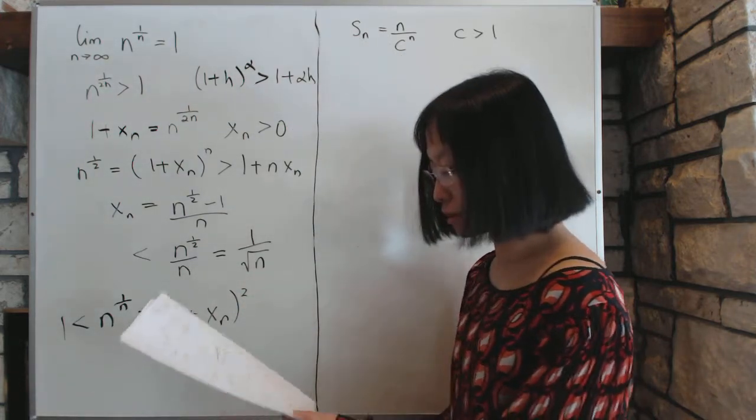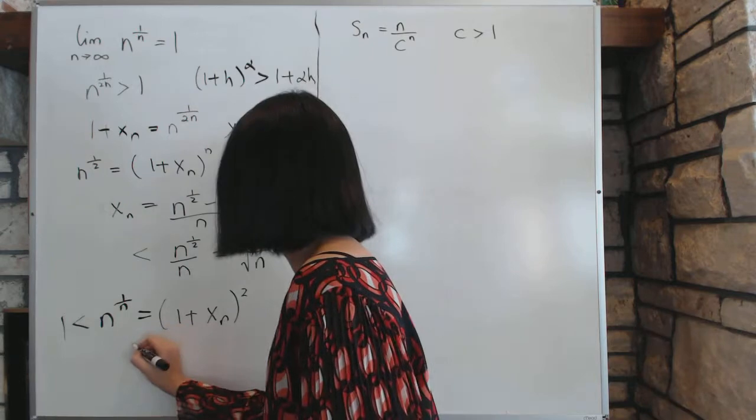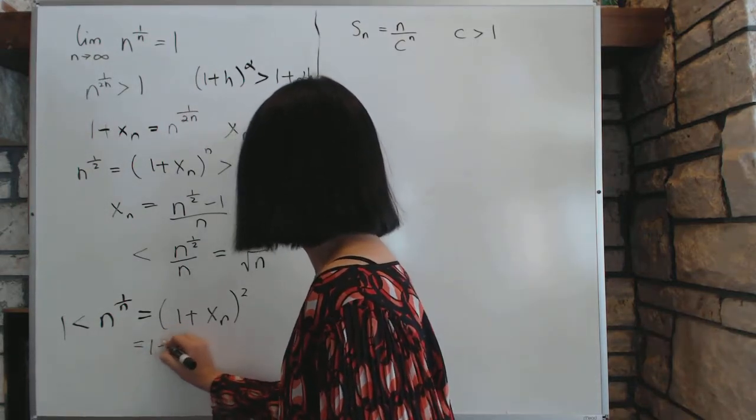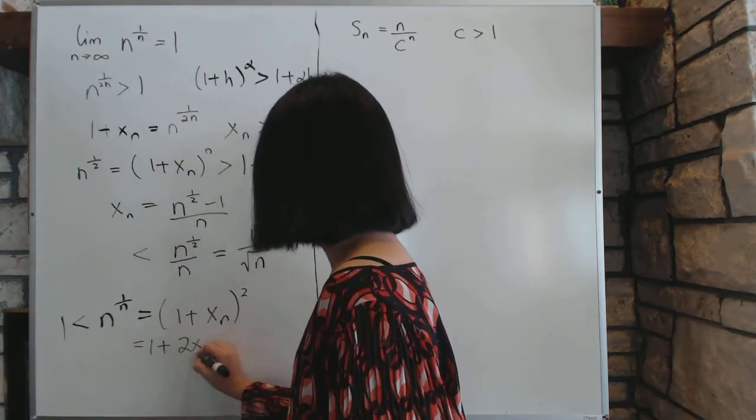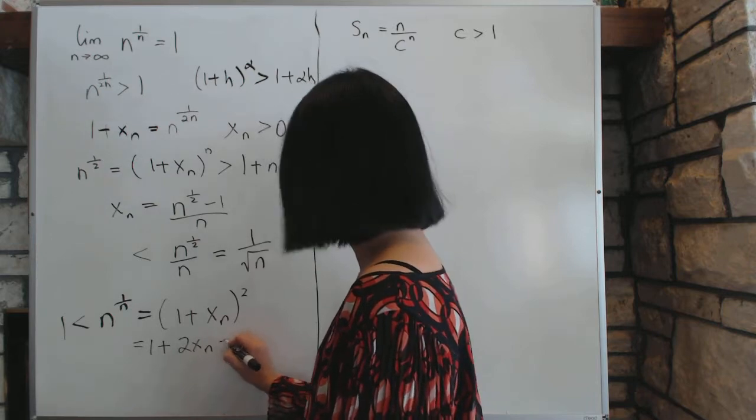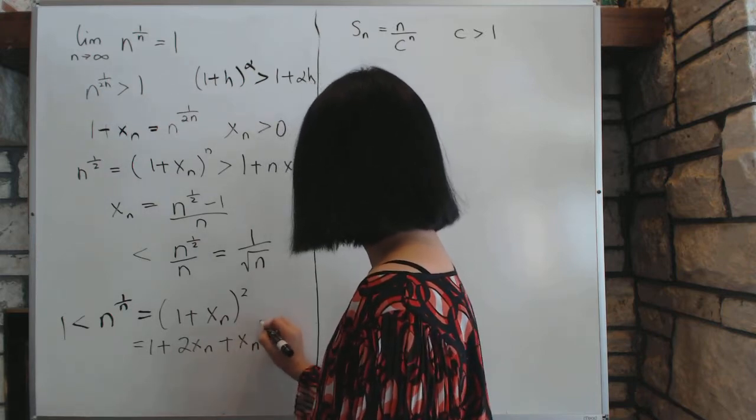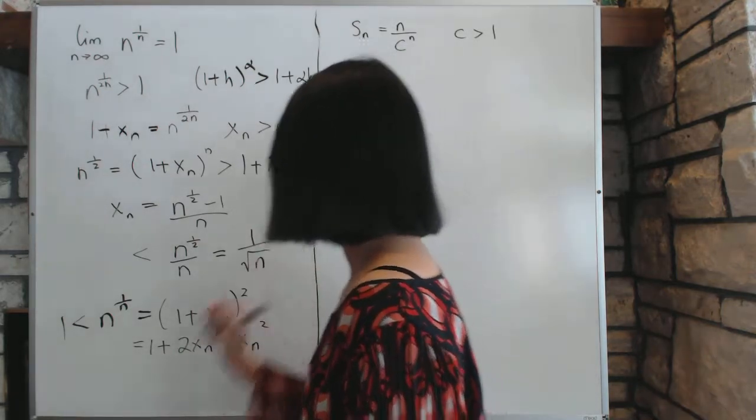Now, this square, of course, is equal to 1 plus 2xn plus xn squared, which is less than,